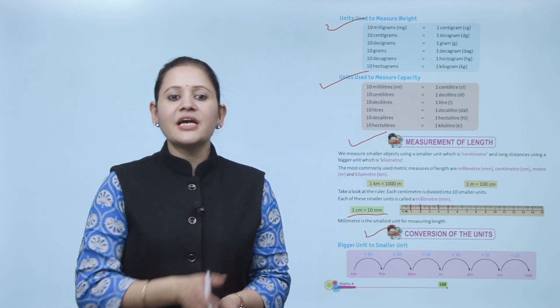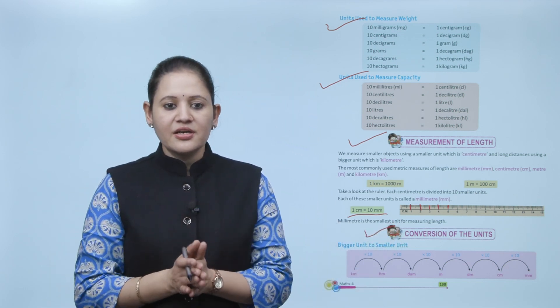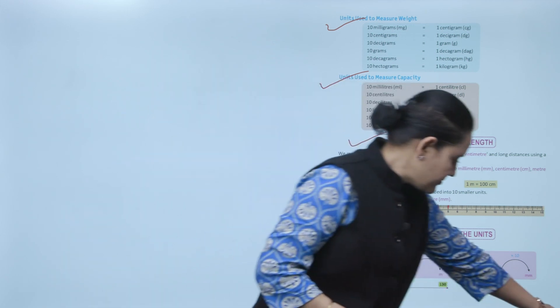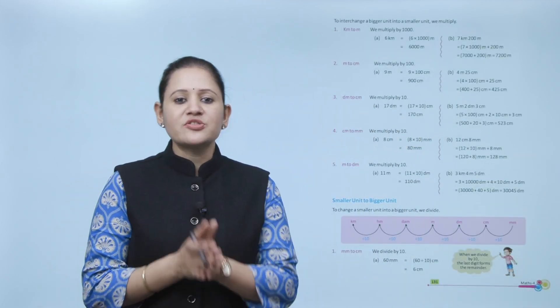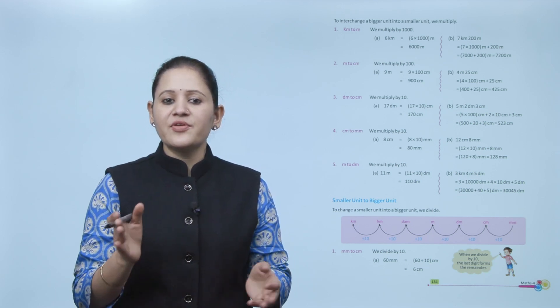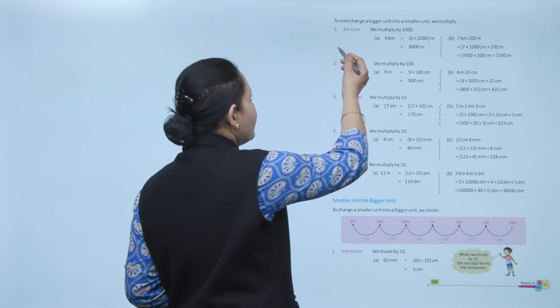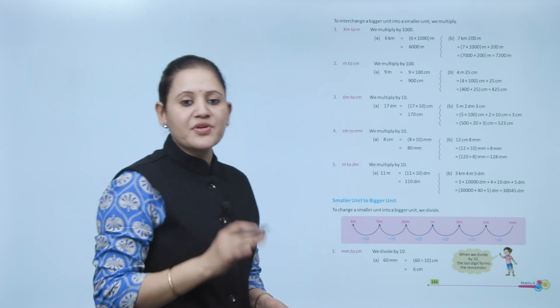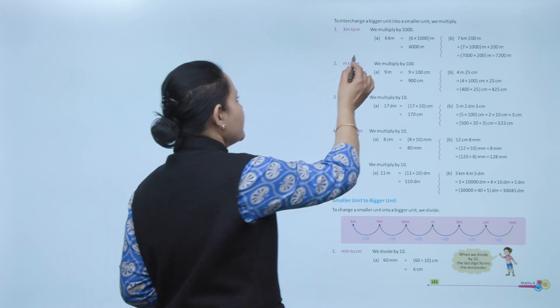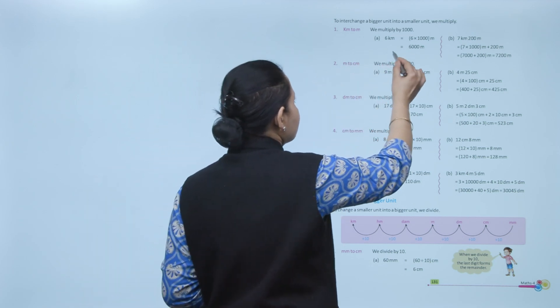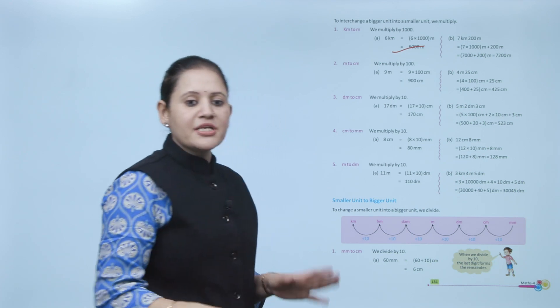How will you convert a bigger unit to a smaller unit? To convert a bigger unit to a smaller unit, we multiply. Kilometer to meter: multiply by 1000. As we know, 1 kilometer equals 1000 meters, so 6 kilometers equals 6 × 1000 = 6000 meters. Next, meter to centimeter: